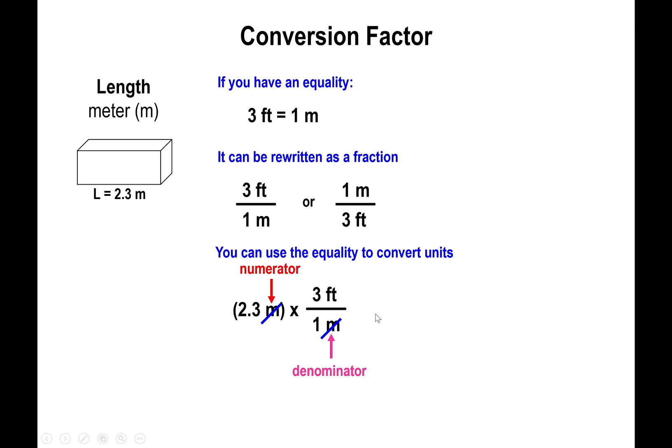What happens here is that you just have to multiply the numbers on top together. 2.3 times 3 gives you 6.9 feet. What you've basically done is utilize a conversion factor to switch from meters ultimately to feet by means of the equality that represents the equivalent quantity of the two different units.